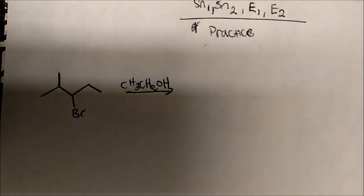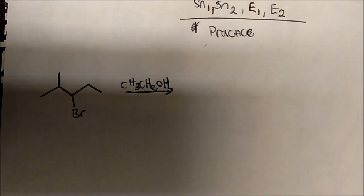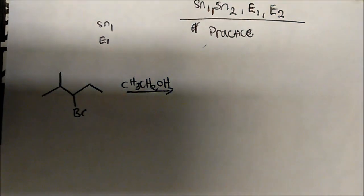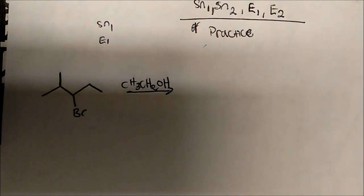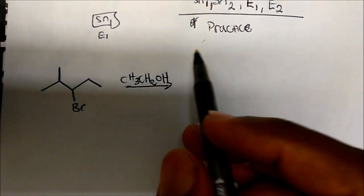So now we've got to go to what we're reacting with. We see that we have a weak nucleophile, which is also a weak base. There's nothing charged. So immediately I know that SN2 and E2 are my fast reactions, so I know that this reaction cannot undergo either of those. Is it going to be SN1 or E1? We have a secondary alkyl halide and a not-so-good nucleophile.